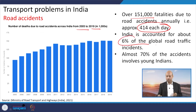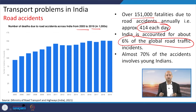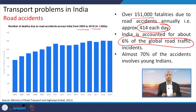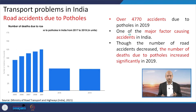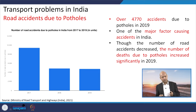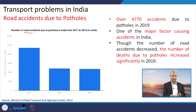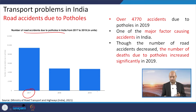Around 6 percent of global road traffic accidents occur in India alone, and almost 70 percent of those accidents involve young Indians — this is a kind of pandemic that needs to be addressed urgently. On a positive note, accidents due to potholes on roads have decreased from 2017 to 2019 as roads were repaired.